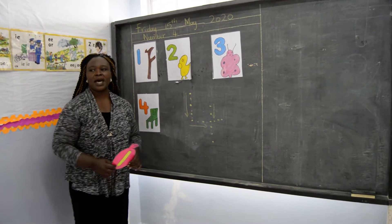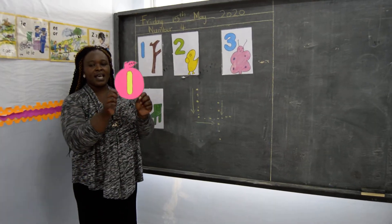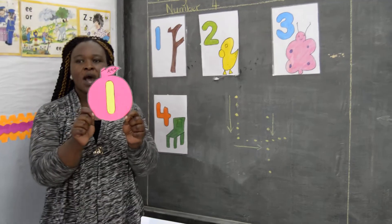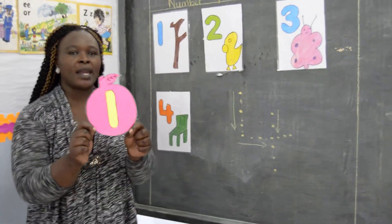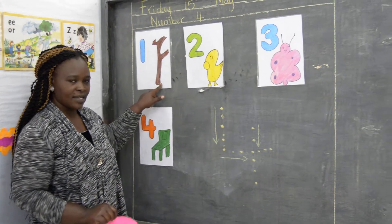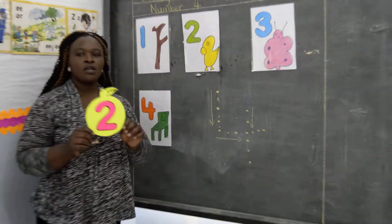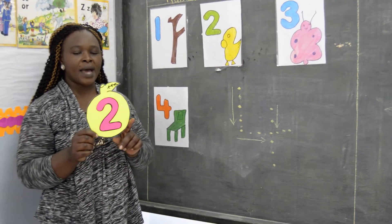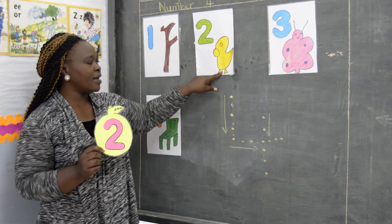We can review the numbers again with my flash card. This is number one. Number one. One like a stick. Number two. Number two. Number two. Two like a duck.